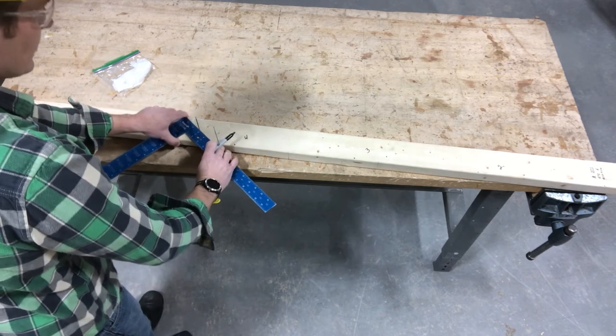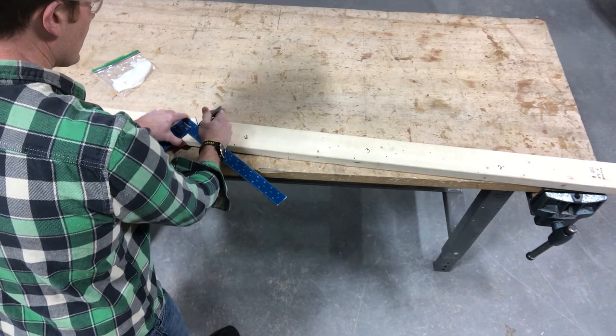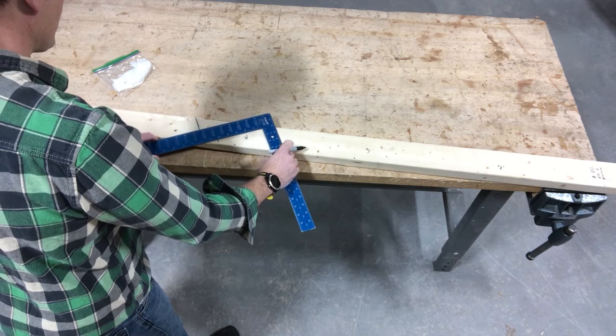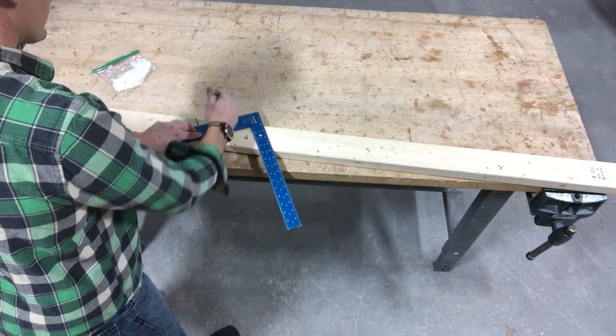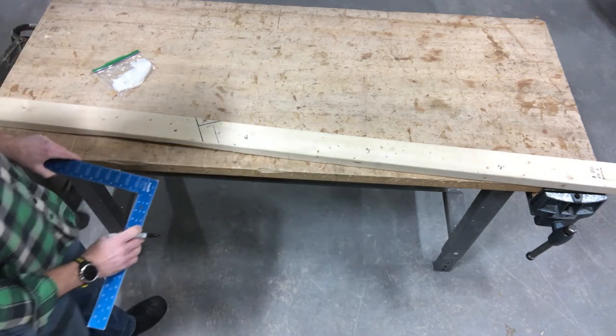So what I'm going to do is just find my one-third, which is right there, and still on the 6 and on the 12. Now this is a seat cut, so it's a level cut. I'm going to be cutting that out right there.